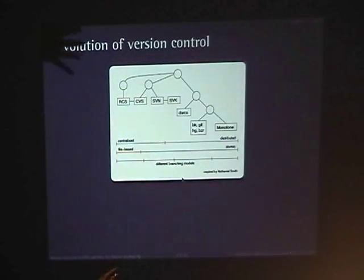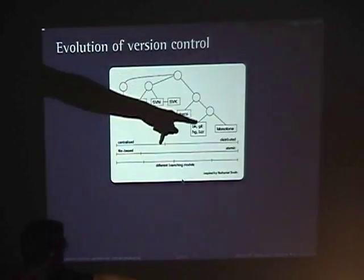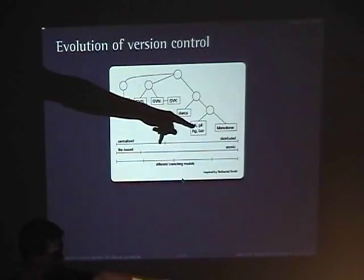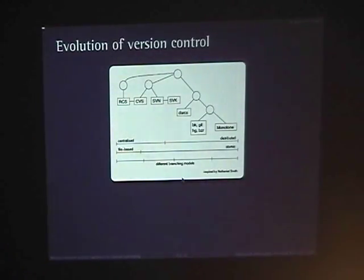We all kind of started out with SCCS and RCS on the far left — centralized, file-based, no branching whatsoever. And then moved over to BitKeeper, Git, Mercurial, Bazaar, and Monotone, which are very distributed, atomic, and have proper branching models.